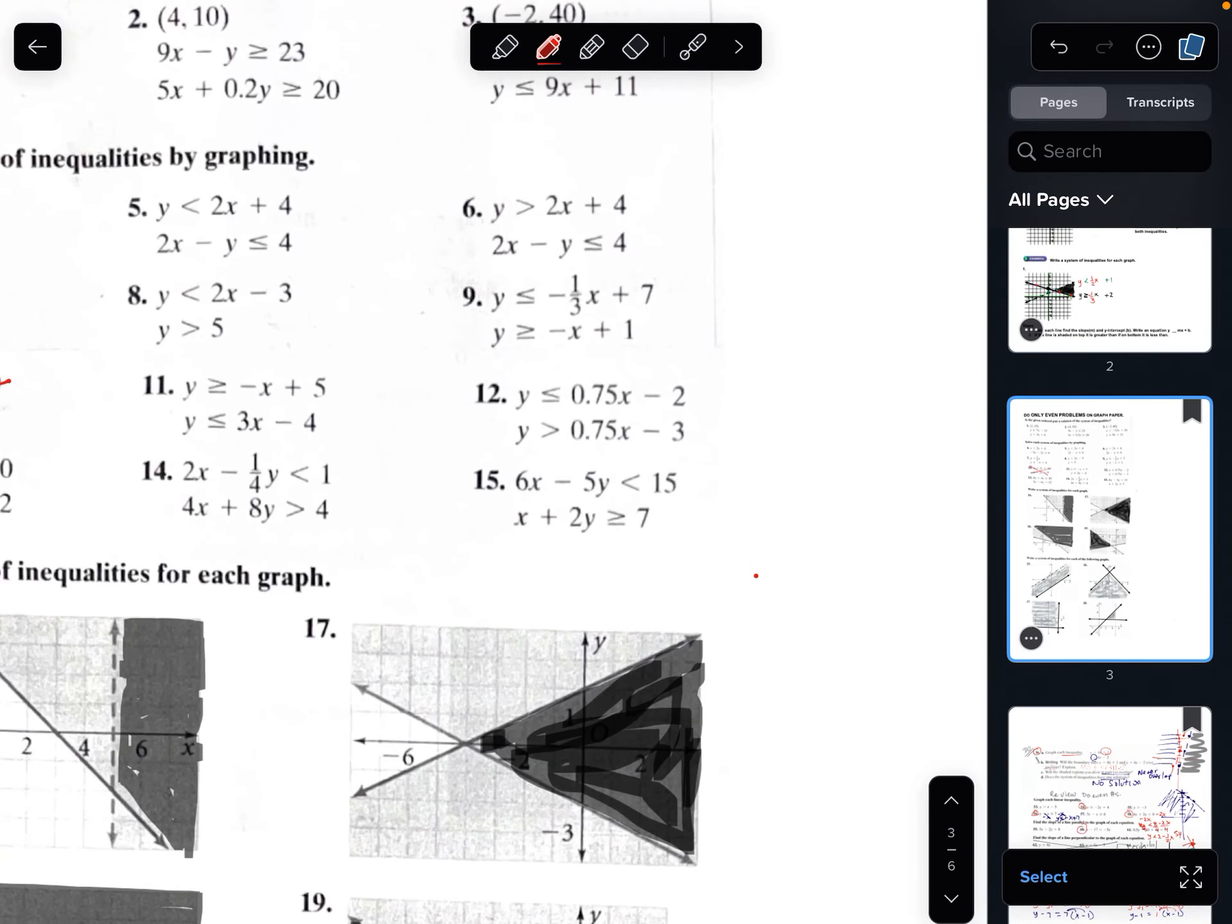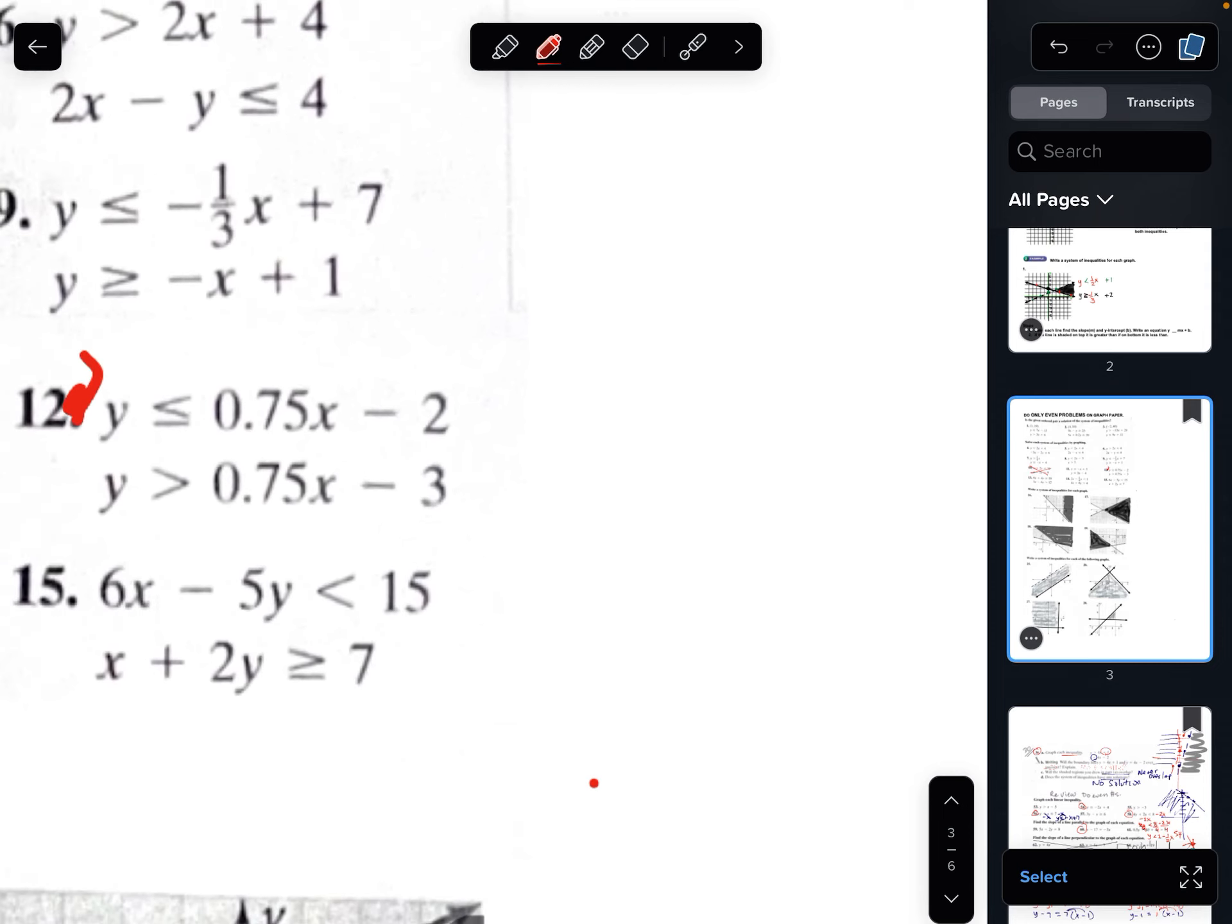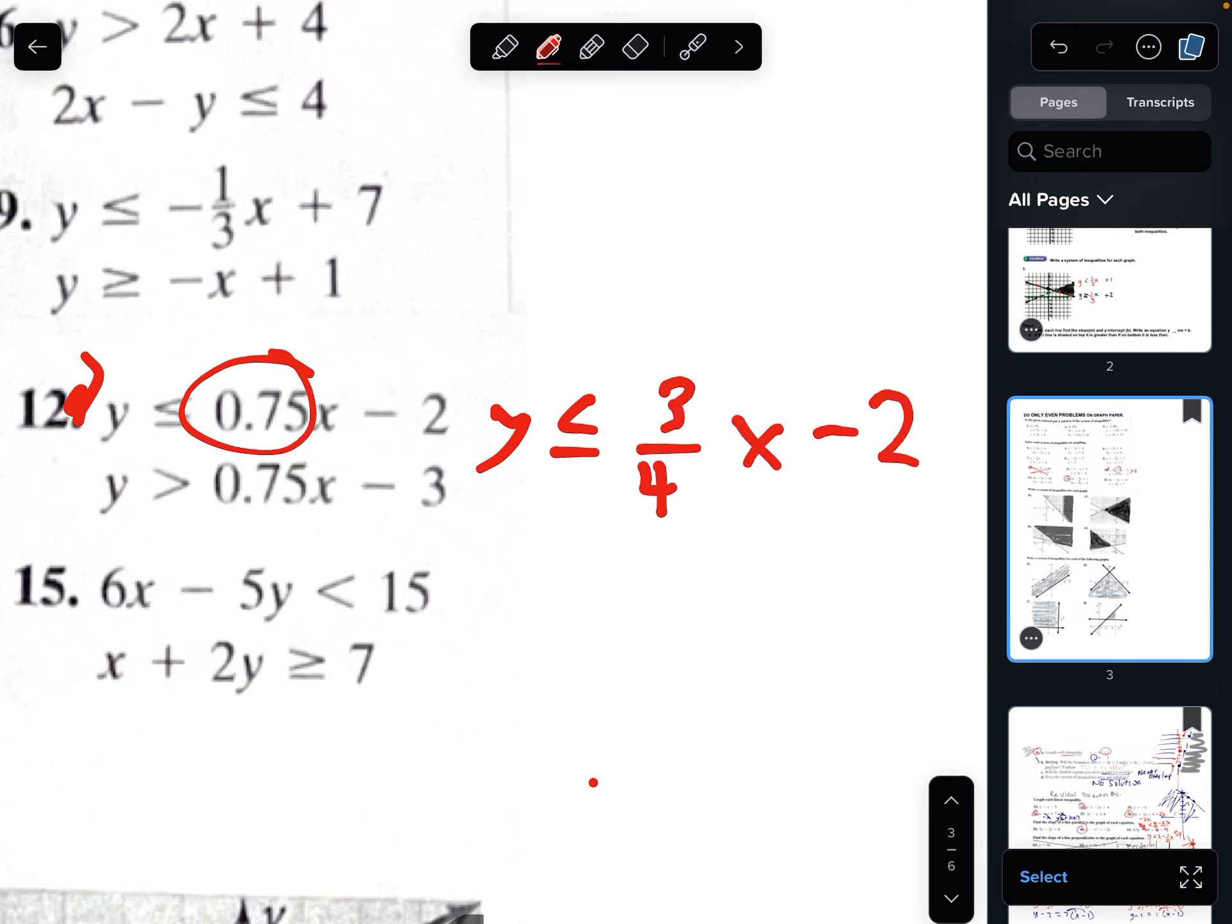Number 10. This video is on this one and this one. This one you change to y is less than or equal 75 cents is 3 out of 4 quarters minus 2. Then 75 cents x minus 3. They're parallel, right? Let's see where they shade.